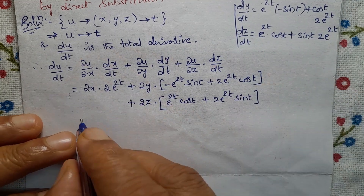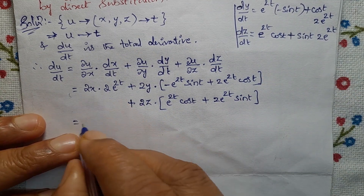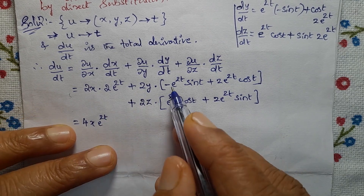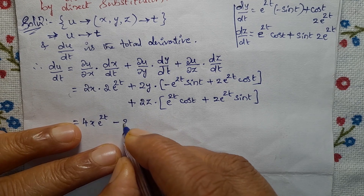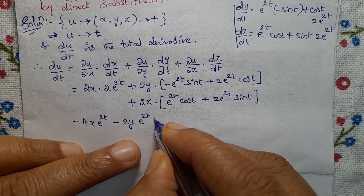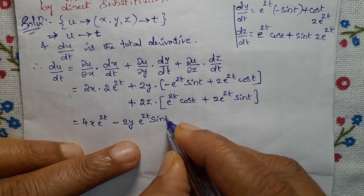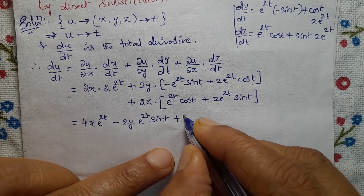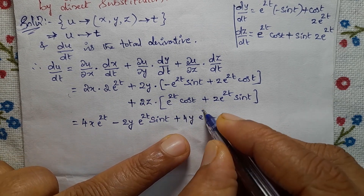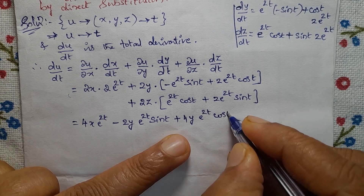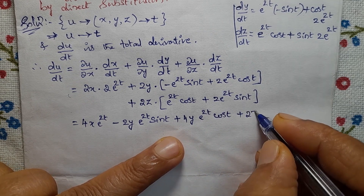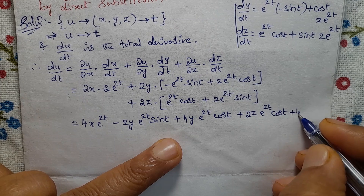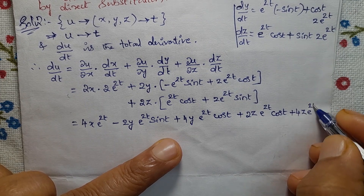Next, plus partial differentiation of u with respect to z is 2z, into dz/dt. Applying the product rule: first function e^(2t) into differentiation of sin t gives cos t; plus second function sin t into differentiation of e^(2t) gives 2e^(2t). So dz/dt equals e^(2t) cos t plus 2e^(2t) sin t.